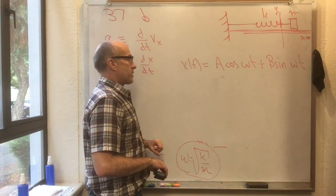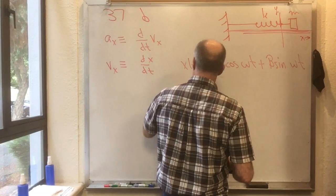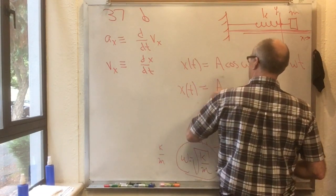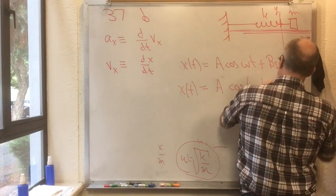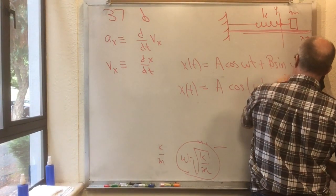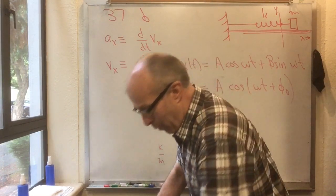Now you might go, oh gosh, that works. But here I got even another one. Try x of t is equal to A cos omega t plus phi naught. And surprise, surprise, you're going to find that works too.